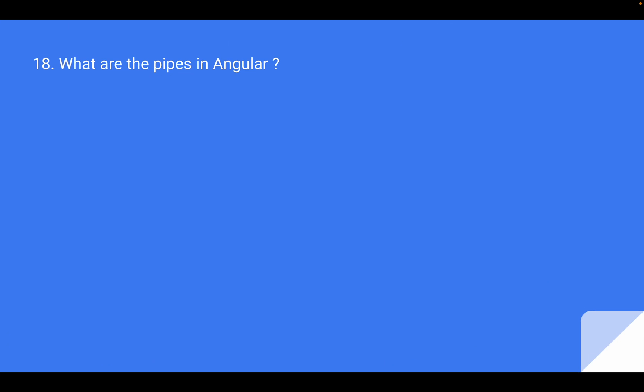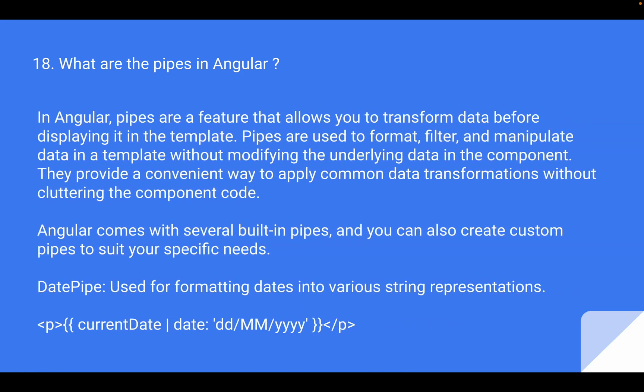Moving to the next question, the interviewer asked: what are pipes in Angular? In Angular, pipes are a feature that allows you to transform data before displaying it in the template. Pipes are used to format, filter, and manipulate data in a template without modifying the underlying data in the component. They provide a convenient way to apply common data transformations without cluttering the component code. Angular comes with several built-in pipes, and you can also create custom pipes to suit your specific needs. As an example, the date pipe is used for formatting dates into various string representations.